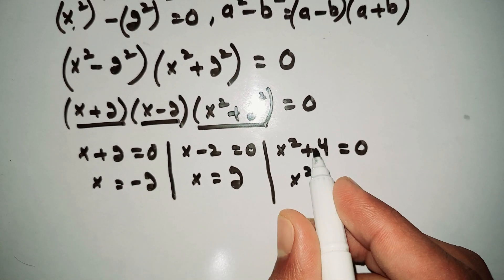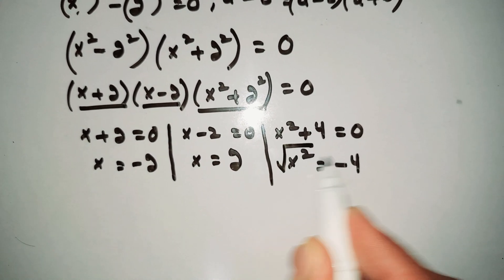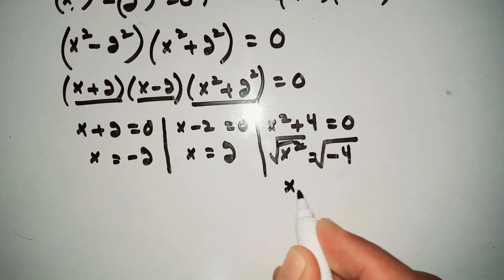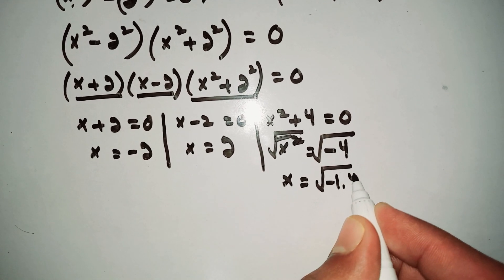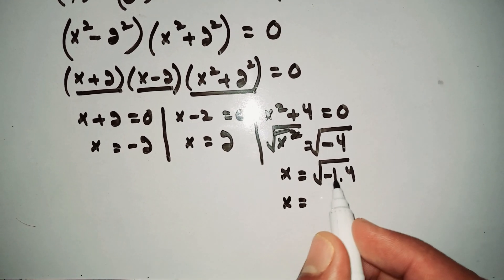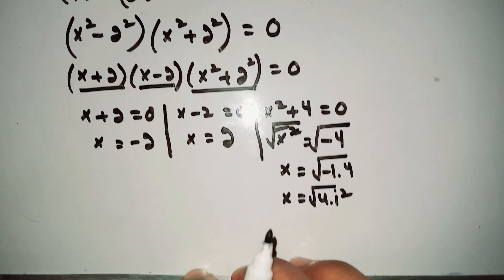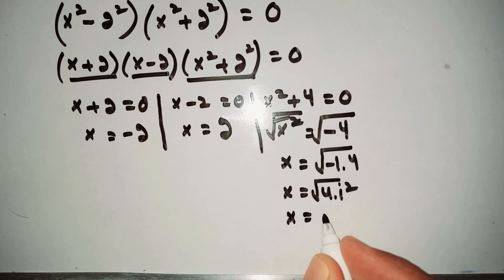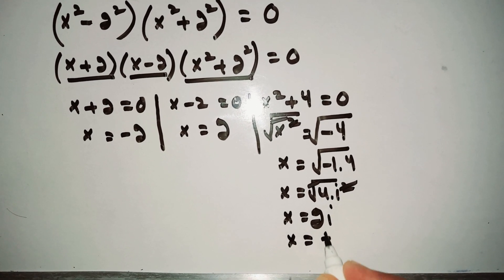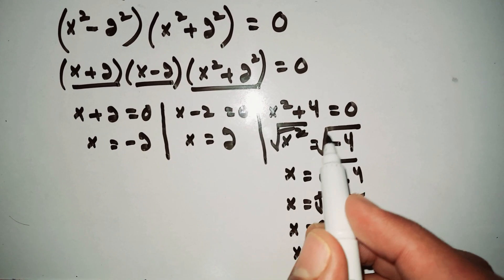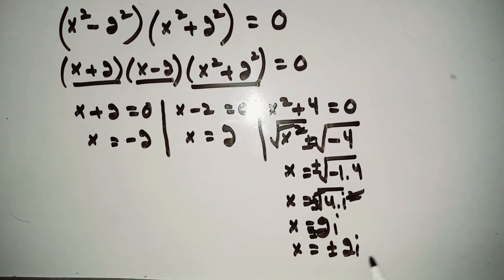From x² + 4 = 0, we move 4 to the other side to get x² = -4. Taking the square root of both sides, x = √(-4). We write √(-4) as √(-1) × √4. Since √(-1) = i (iota), we get x = ±2i.